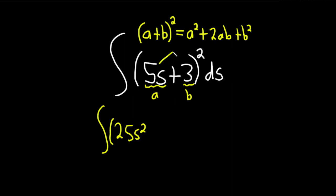Then you multiply these two and you're going to get 15s. Then you double it so that'll be 30s and then you square the 3 so that'll be 9 and then parentheses ds.